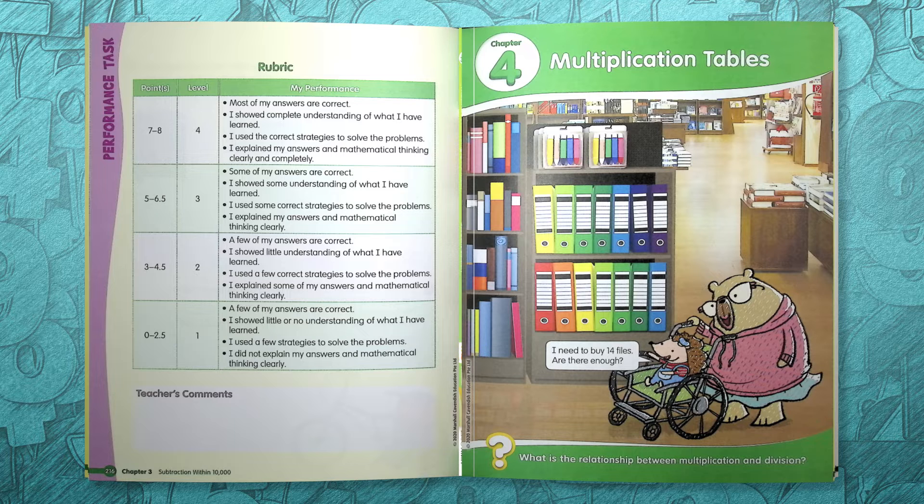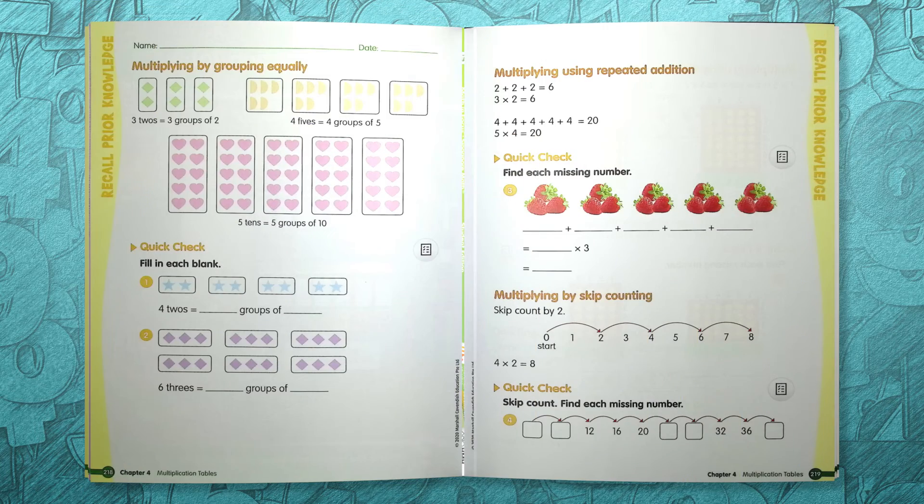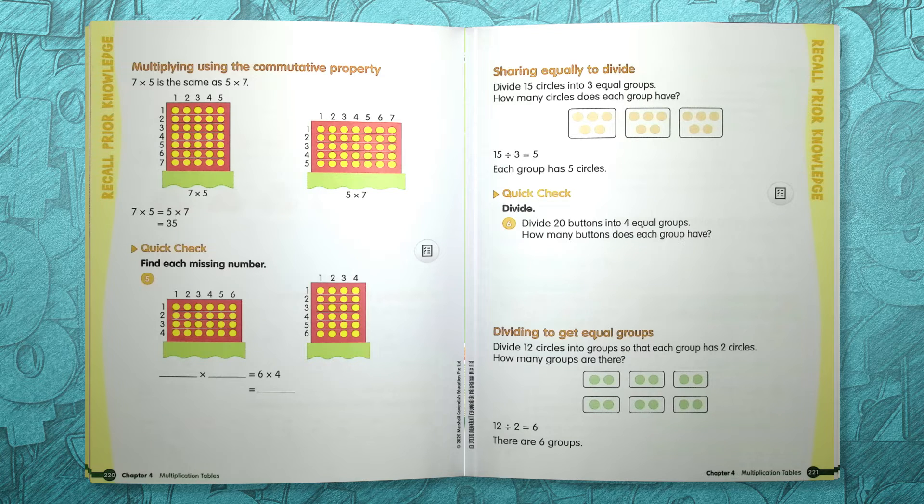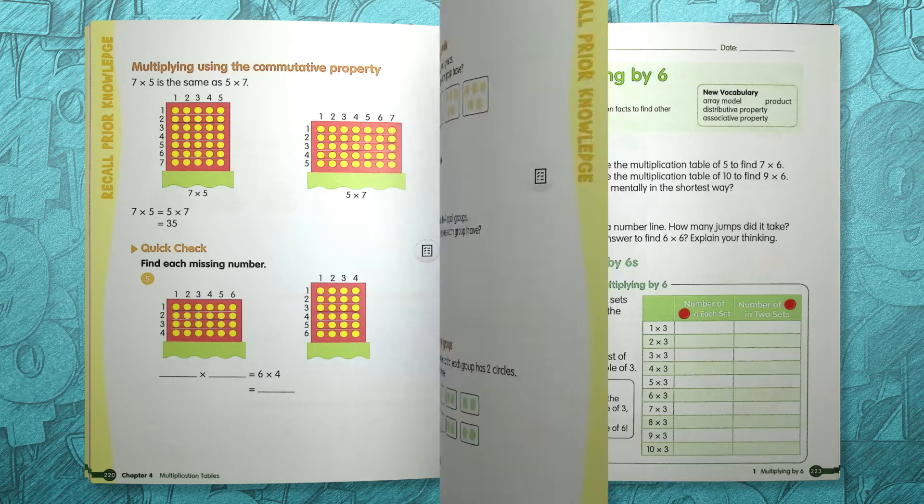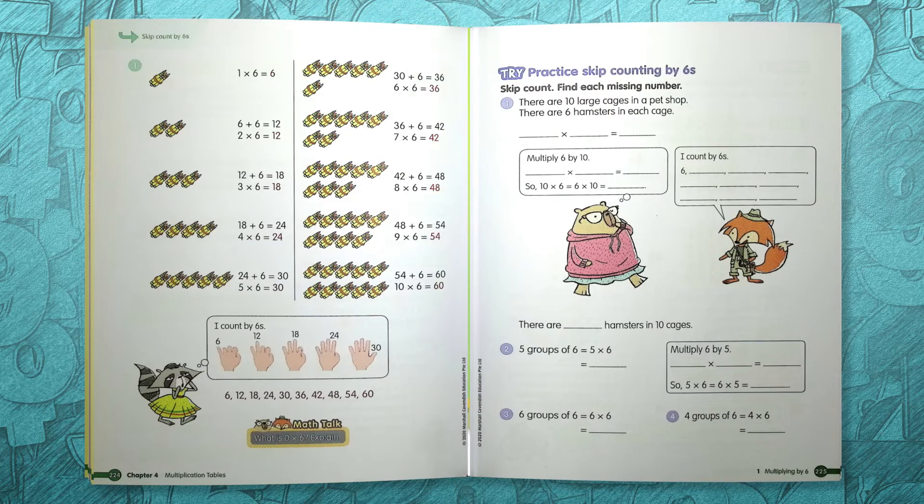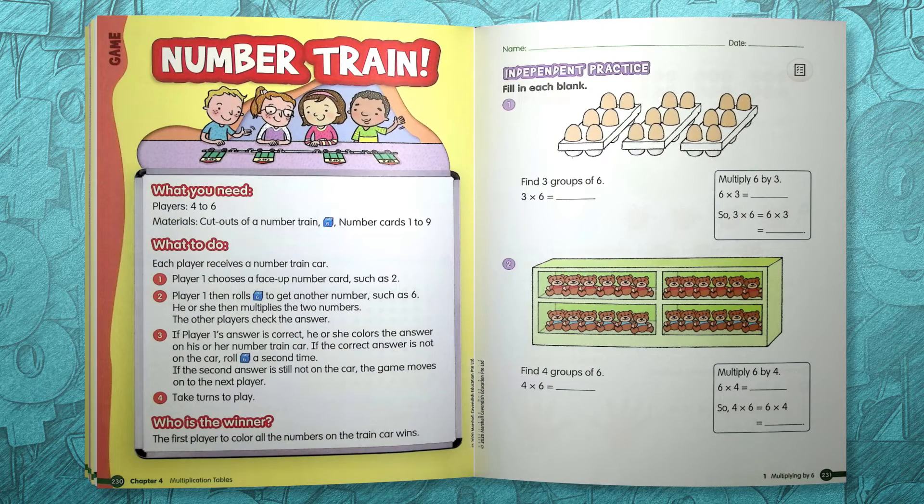On the same page is an essential question that is tied to the chapter's main learning objective and teaches kids to think critically. Next is a recall prior knowledge section that gives students the chance to review previous concepts learned. Instruction, written practice, and hands-on activities are provided with each section in the focus cycle. Independent practice comes after the focus cycle. There might be a game or another activity before independent practice to help master the concept just learned.